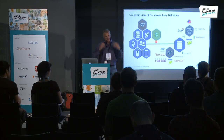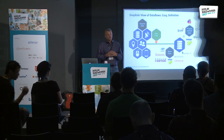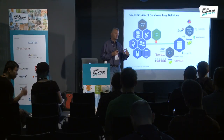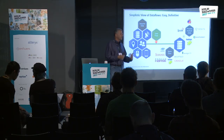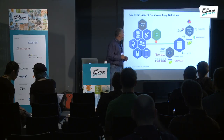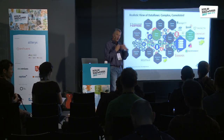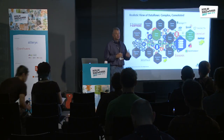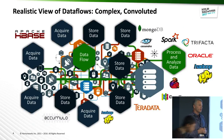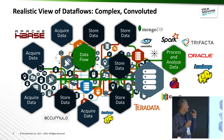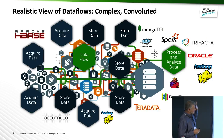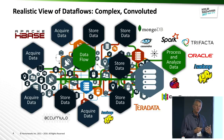Simplistically, we think about data flow as just ingesting some data, moving it along, and storing it somewhere. But reality looks more like this — everyone's got data all over the place. It's this mess of data moving around, which is what we consider data flow, and what NiFi and MiNiFi are designed to solve.